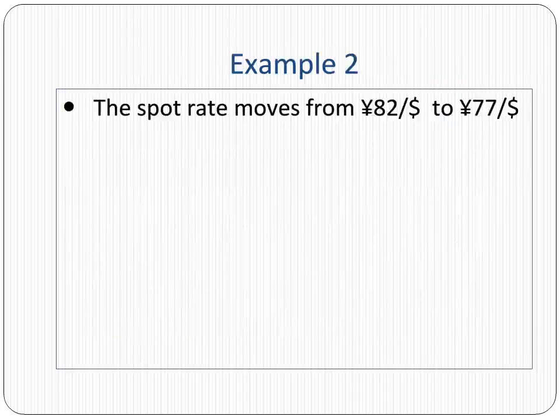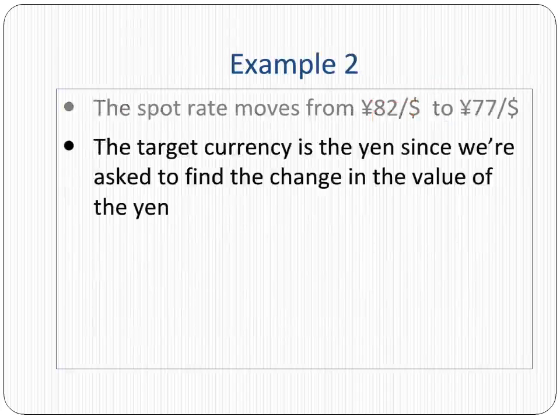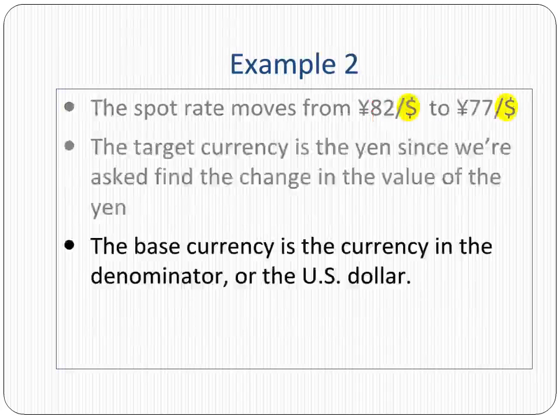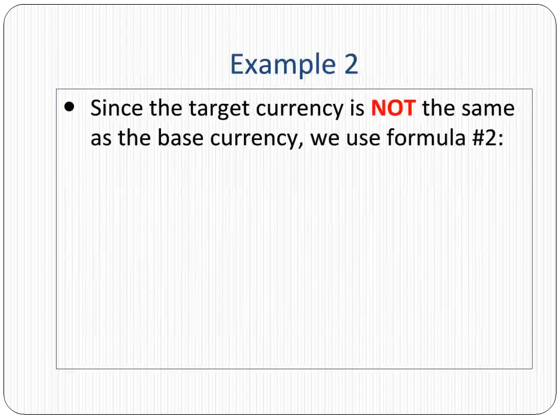In the second example, the spot rate moves from 82 yen per dollar to 77 yen per dollar. The target currency is the yen, since we are asked to find the change in the value of the yen. The base currency is the currency in the denominator, or the US dollar. Since the target currency is not the same as the base currency, we use formula number 2.